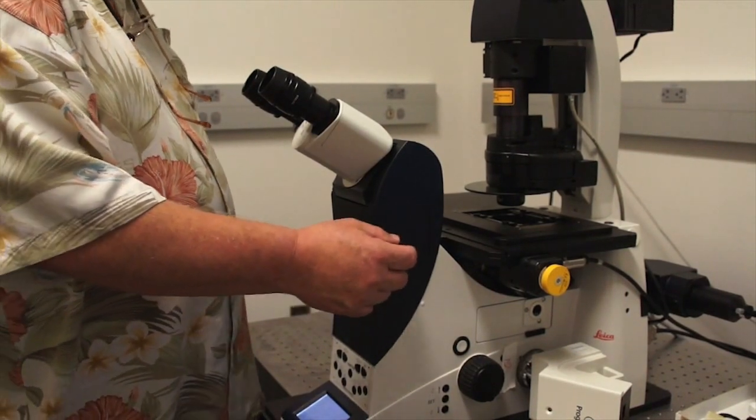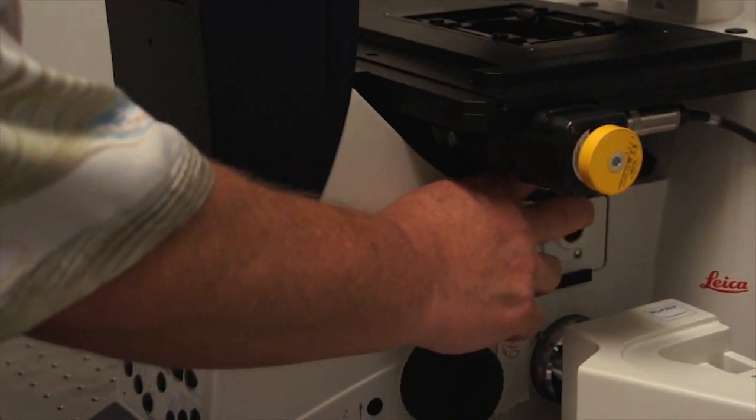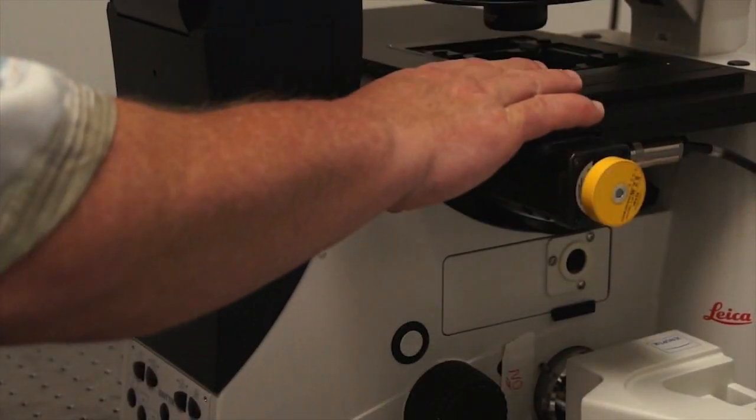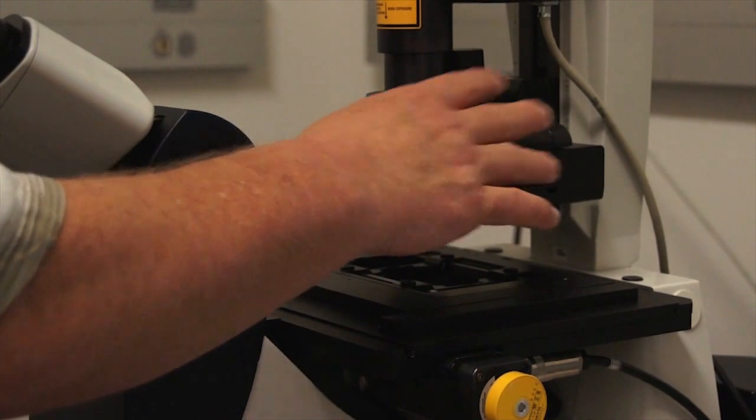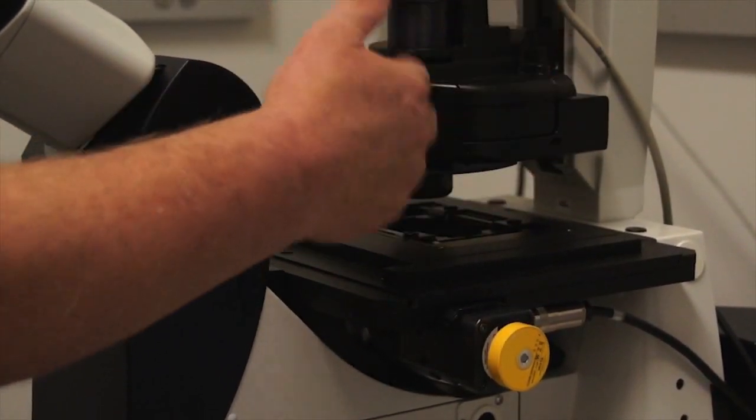For example, the optics are below the stage, so all the objectives that you use for imaging are below the mechanical stage. The condenser is above the stage, before the condenser was below the stage and the optics were above. These are reversed now.